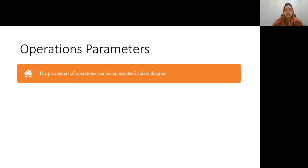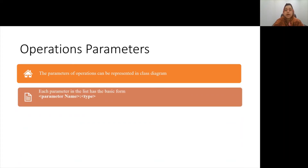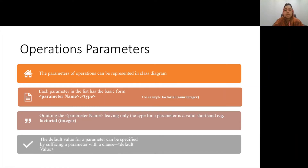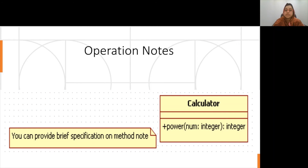The operation parameters can be represented in a class diagram using provided notations. Each parameter will have a parameter name and its type. For example, factorial with parameter num of type integer. We can also omit the parameter name and only write the parameter type — for example, factorial with just integer. The default value of the parameter can be specified as well; for example, factorial where num is of type integer with a default value of 5. The specification of a method body for an operation may be included as a note node attached to the operation in the class diagram, typically where the method specification is relatively small.